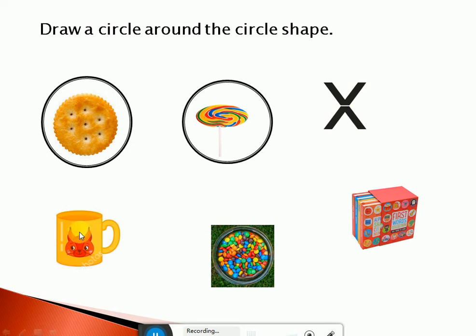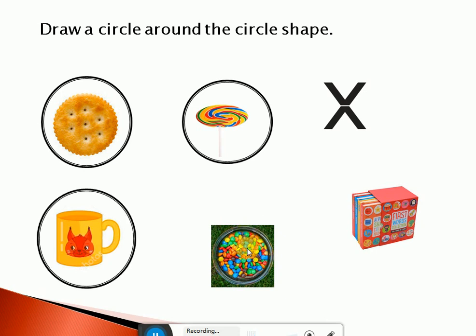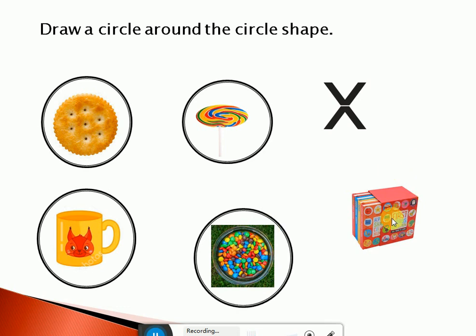Now look at this — it is a cup. Cup is also in a circle shape. Yes! It is also in circle shape. Let's circle it. Well done! Now look at this — here are buntees. Do you like to eat buntees? Yes! Are buntees in circle shape? Yes! Let's circle it. Well done! And what is this? It is a box. Is it in circle shape? No!